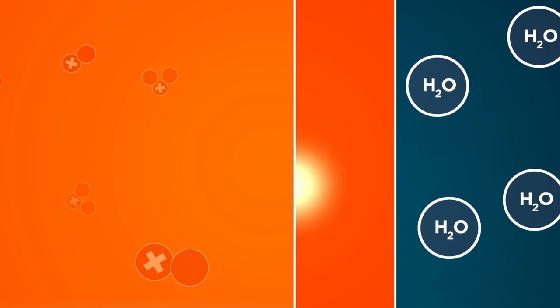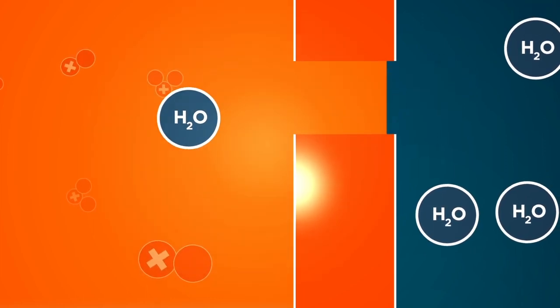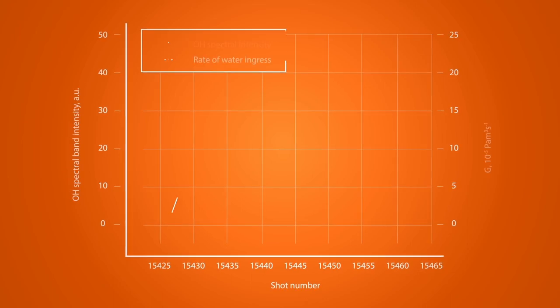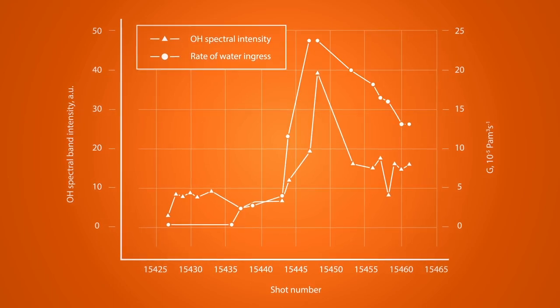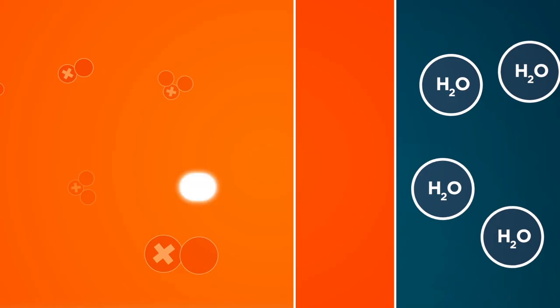If water enters the plasma chamber, a devastating explosion could result. The scientists have worked out the spectroscopic signature of water as it hits the plasma's edge, creating an early warning system.